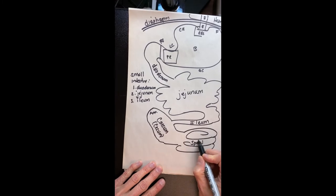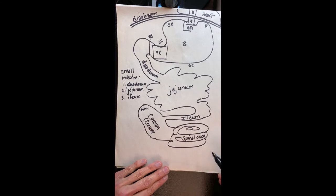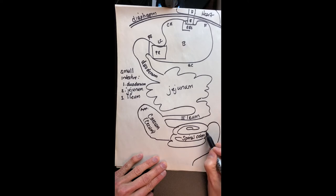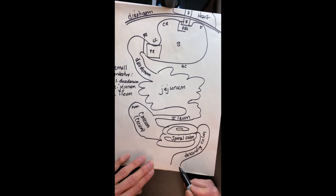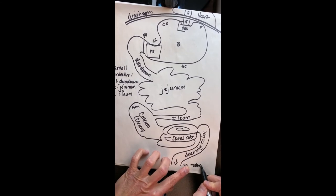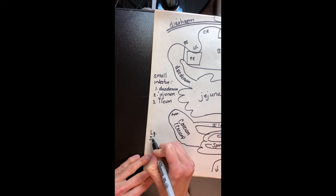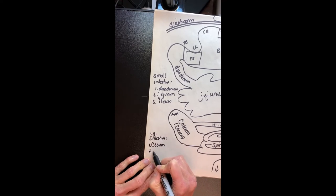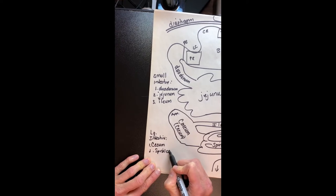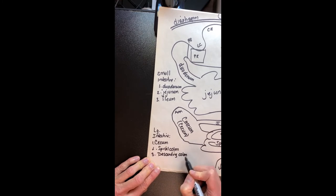The spiral colon does look very much like it's going in loops. Then the spiral colon ends and goes all the way down as the descending colon to the rectum and then out the anus. So let's list the parts of the large intestine: cecum, spiral colon, descending colon, and then rectum.